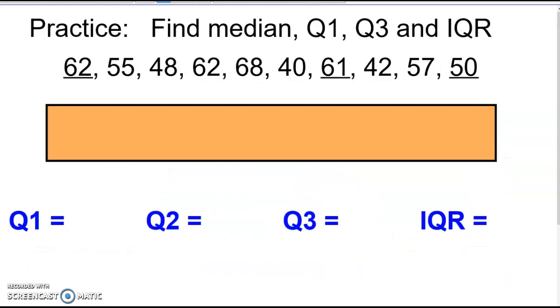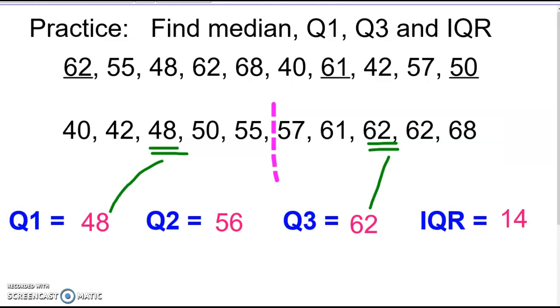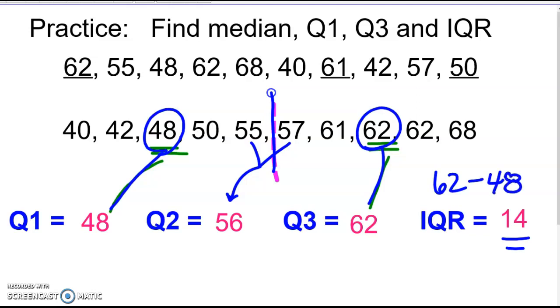Go ahead and pause and find Q1, Q2, Q3, and IQR for this set. So I put these numbers in order. I found the exact middle was right here. So I had to find the average between these two to get my median. Then the middle of this bottom set is Q1. The middle of the upper half is Q3. And then to get IQR, it's Q3 minus Q1. So 62 minus 48 gave me 14.